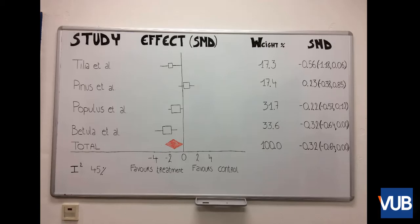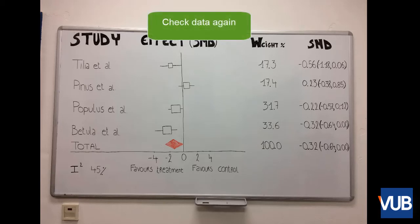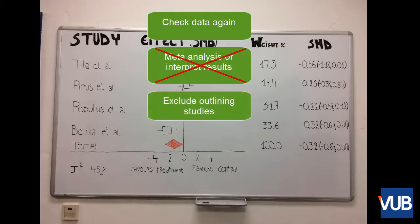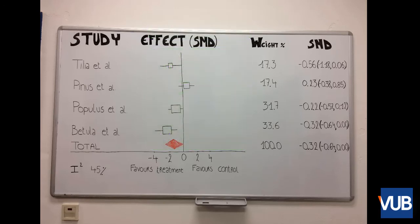Fortunately, authors have several options to cope with heterogeneity. Example given, check data again, do not do a meta-analysis or interpret results, exclude outlining studies if an obvious reason is present, or explore heterogeneity by conducting subgroup analysis or meta-regression. The division in subgroups gives researchers the possibility to investigate heterogeneity. Example given, create a subgroup on age, geographical location, gender, etc.